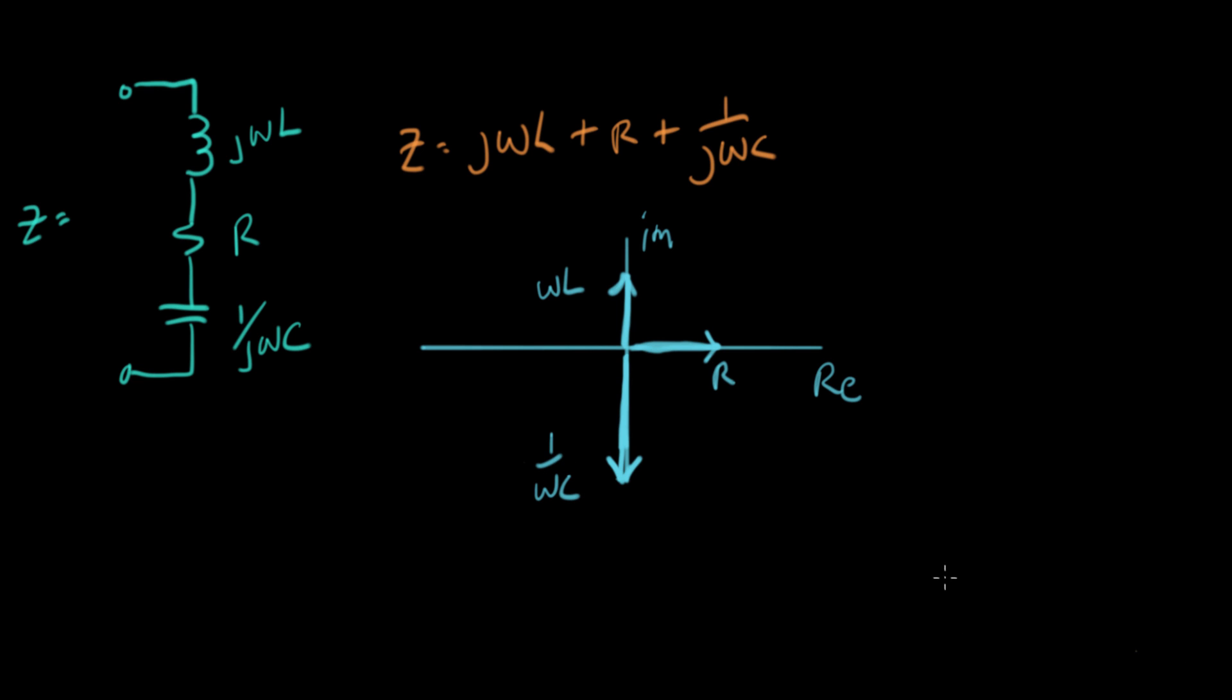And when we put all these together, we do basically a vector add of these guys here. So let's move the L over here. L goes up like that. There's a vector add of L. And then I have a vector add of this vector here, adds on to that.